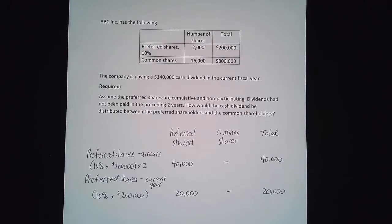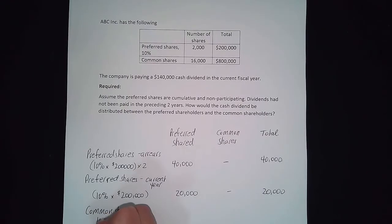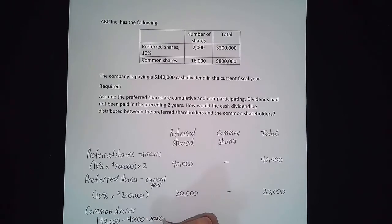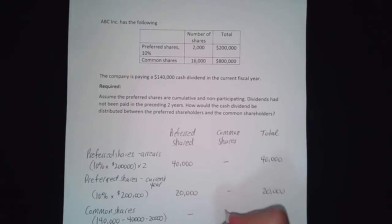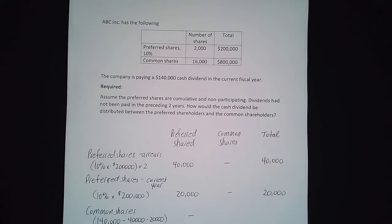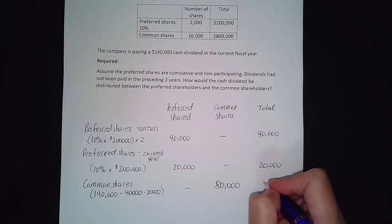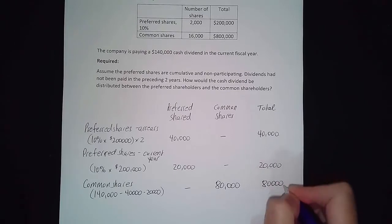Now the remainder of the cash dividend is going to be distributed 100% to the common shareholders. We've got the $140,000, subtract the $40,000 in arrears, subtract the $20,000 paid for the current year preferred dividend, and this amount is what will be paid to the common shareholders — in this case, $80,000. We use that for both the total column and the common share column.